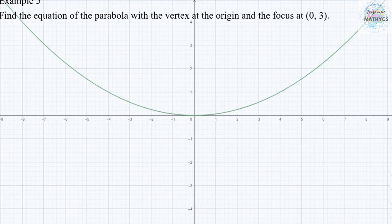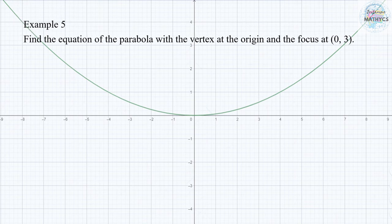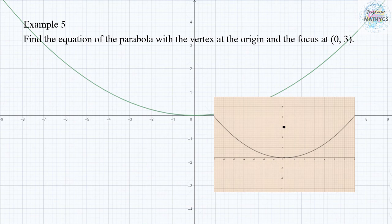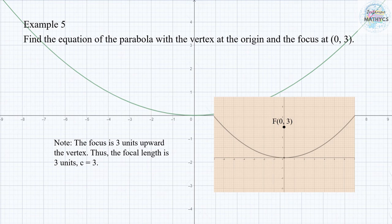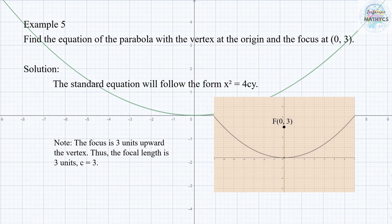Number 5: find the equation of the parabola with the vertex at the origin and the focus at (0, 3). We identify the focal length by counting the number of units of the focus from the vertex. Since our parabola opens upward, it follows the form x squared equals 4Cy, giving us the result x squared equals 12y.